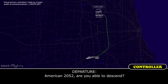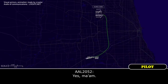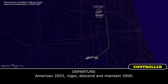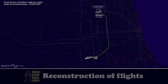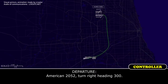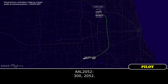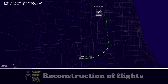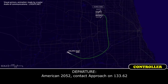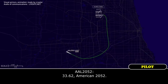American 2052, are you able to descend? Yes, ma'am. American 2052, descend and maintain 5,000. 5,000, American 2052. American 2052, turn right heading 300. 300, 2052. American 2052, contact approach on 133.62. 33.62, American 2052.